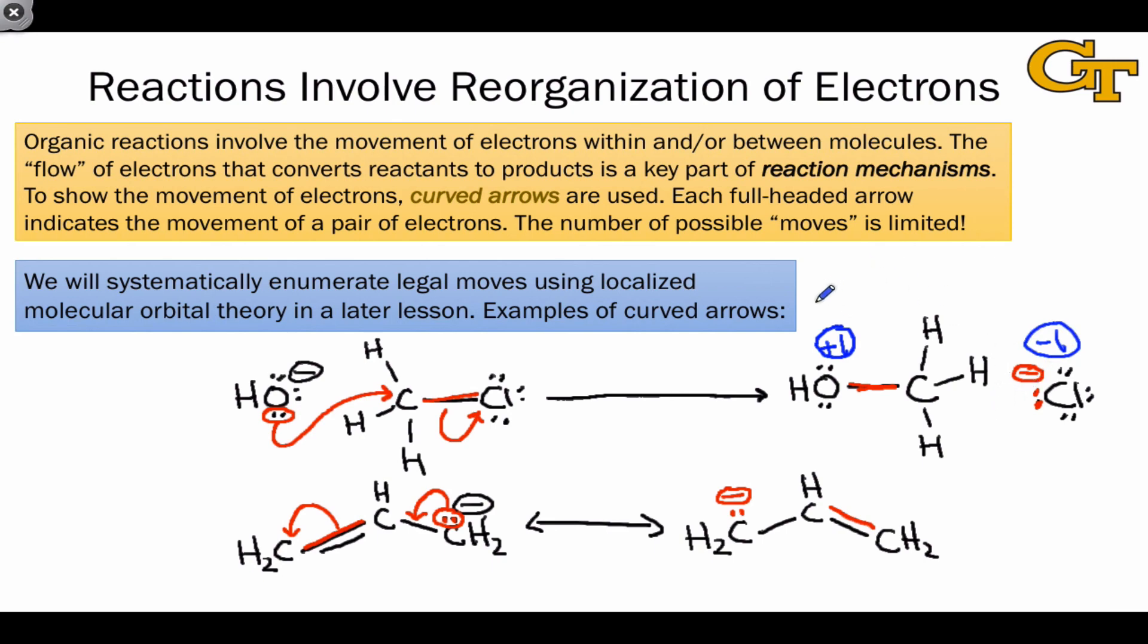And this is general for electron flow. The source increases in charge by one unit, and the sink decreases in charge by one unit.